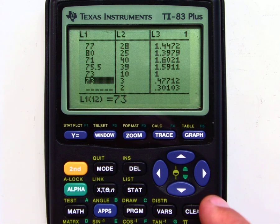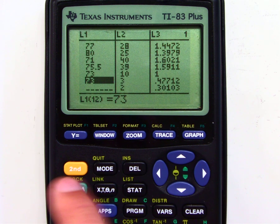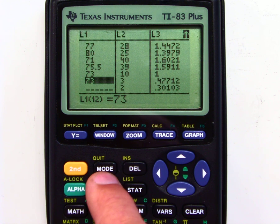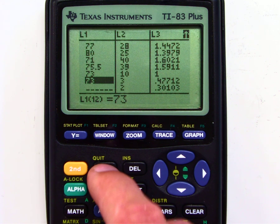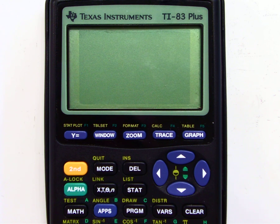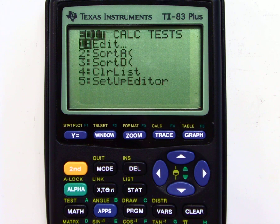That's how you store data into your calculator, and what I want you to notice, if I hit second, quit. Quit is in yellow, so when I hit the second button, it's yellow, it's going to access any yellow button I hit. I go to the home screen here, and even if I turn the calculator off, and then back on again, if I go to stat, edit, it has my original list there.